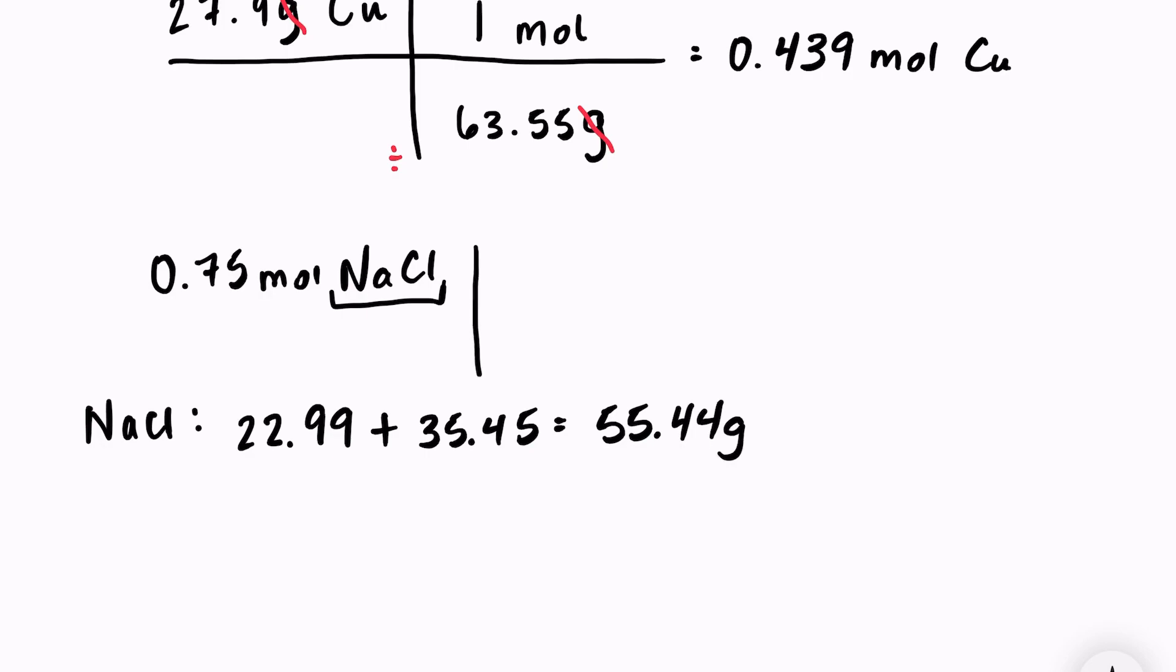So for my dimensional analysis, I can put one mole on the bottom because I want my units of mole to cancel out. Grams will go on the top, and I use the mass 55.44 because that is the molar mass of NaCl. So in your calculator, you just put 0.75 times 55.44, and that will equal 41.58 grams of NaCl. So you would know exactly how much salt you need to measure out.